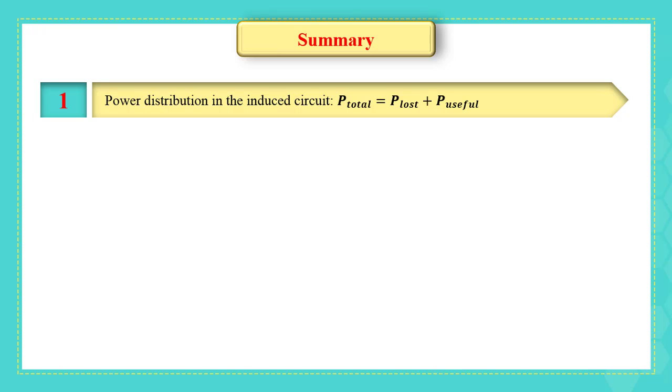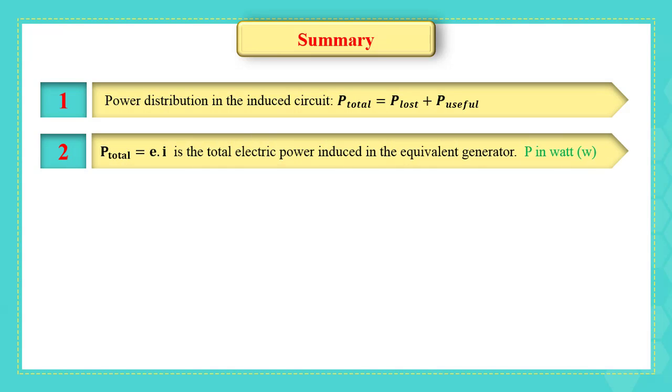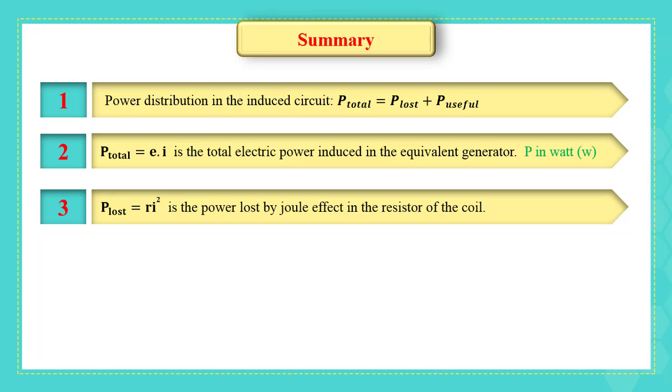Summary. 1. Power distribution in the induced current: P total equals P lost plus P useful. 2. P total equals E multiplied by I is the total electric power induced in the equivalent generator, P in watt. 3. P lost equals R I square is the power lost by Joule effect in the resistor of the coil.